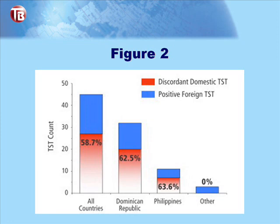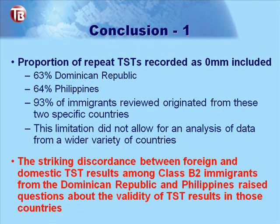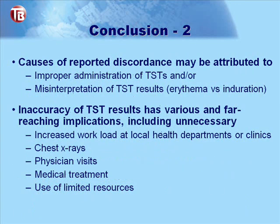Looking at all countries, the blue represents positive foreign TST and the red represents discordant domestic TST. Dominican Republic and Philippines showed the most discordance, while Nepal and India showed no discordance. 93 percent of immigrants reviewed originated from the Dominican Republic and Philippines, which limited analysis of data from a wider variety of countries. The striking discordance raises questions about the validity of TST results in those countries. Possible causes include improper administration or misinterpretation of TST results — reading redness versus induration — as well as improper storage of the solution. Misinterpretation is felt to be most likely, as even in New Jersey we still hear of private doctors and clinics reading redness versus induration.